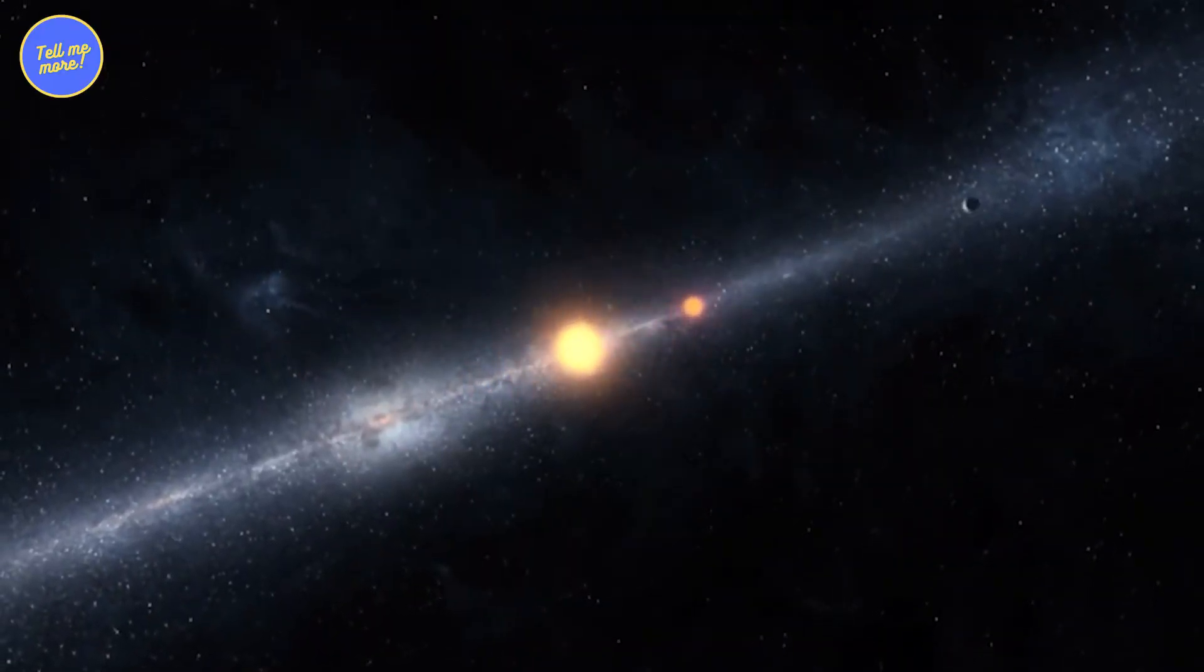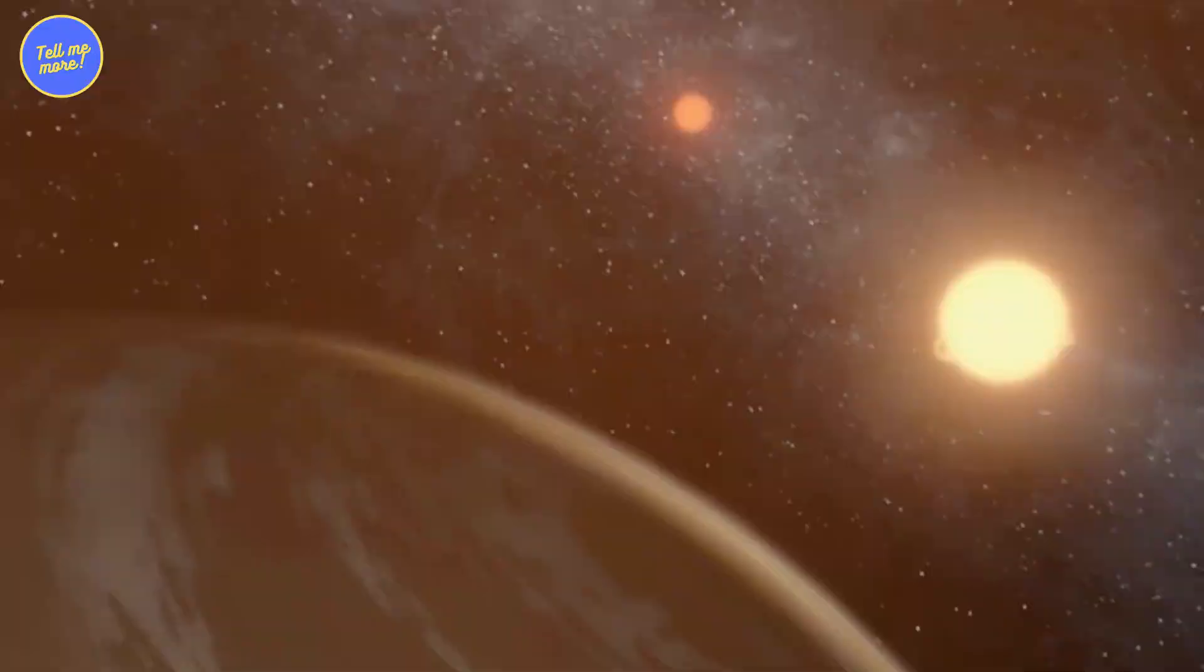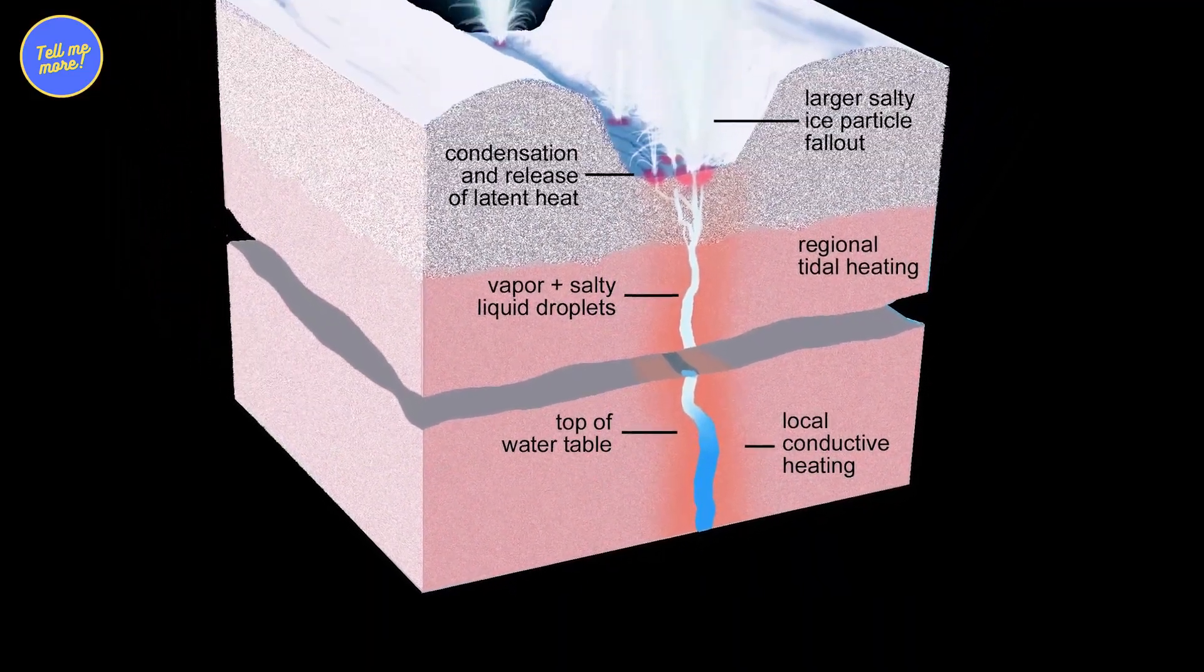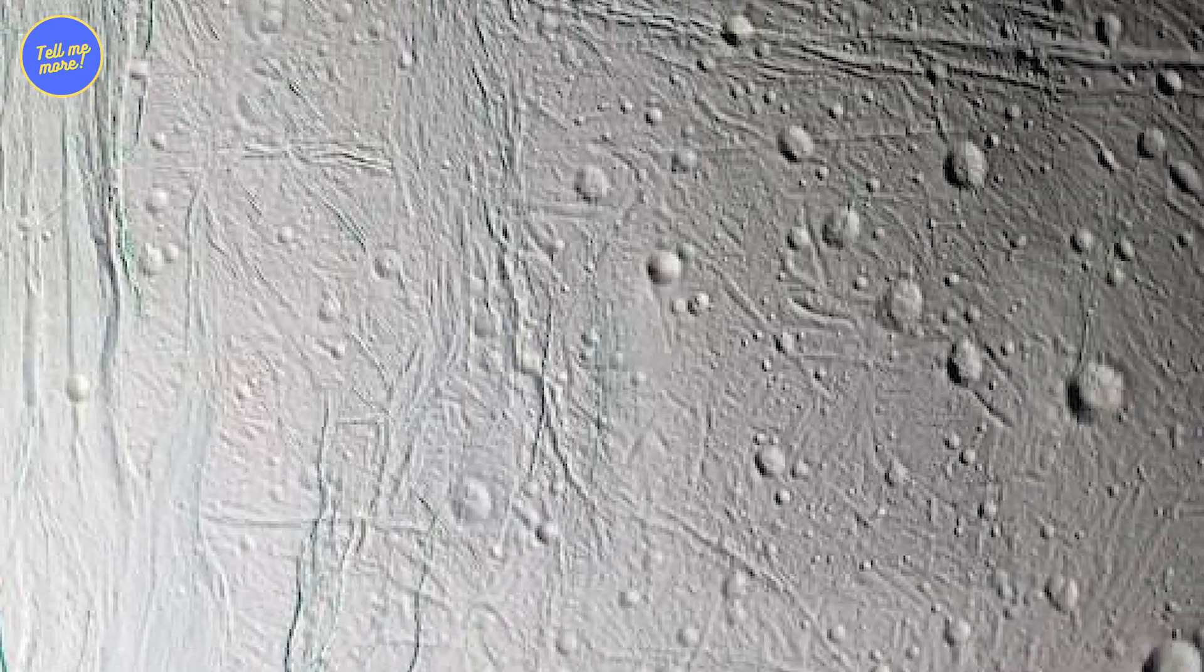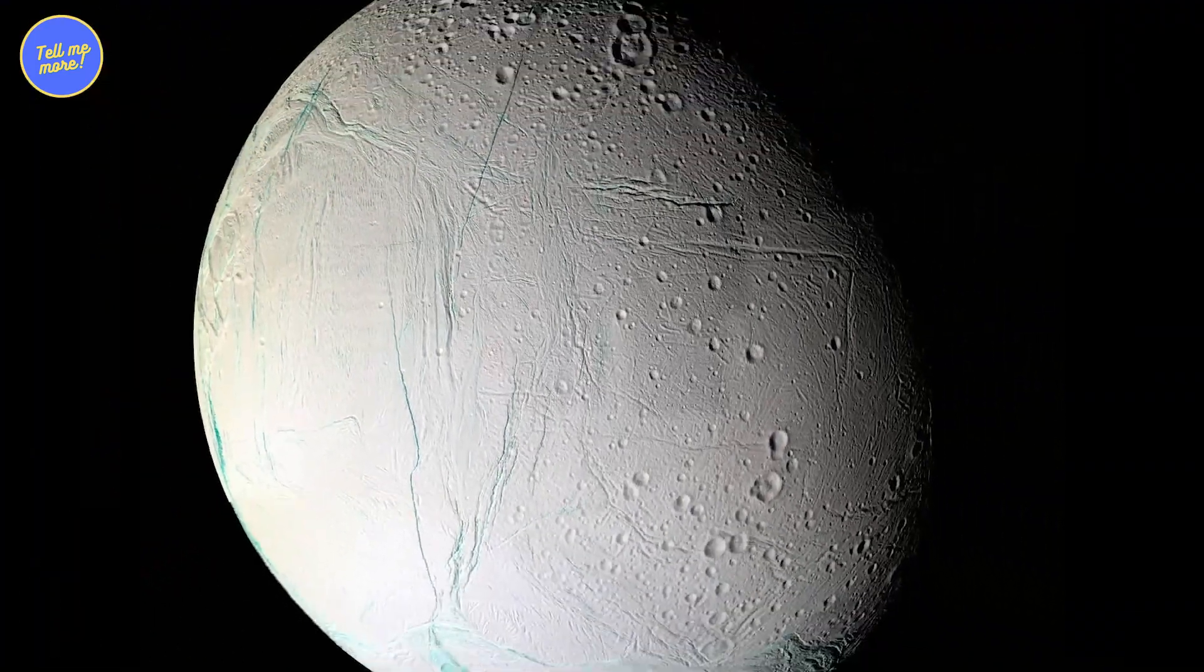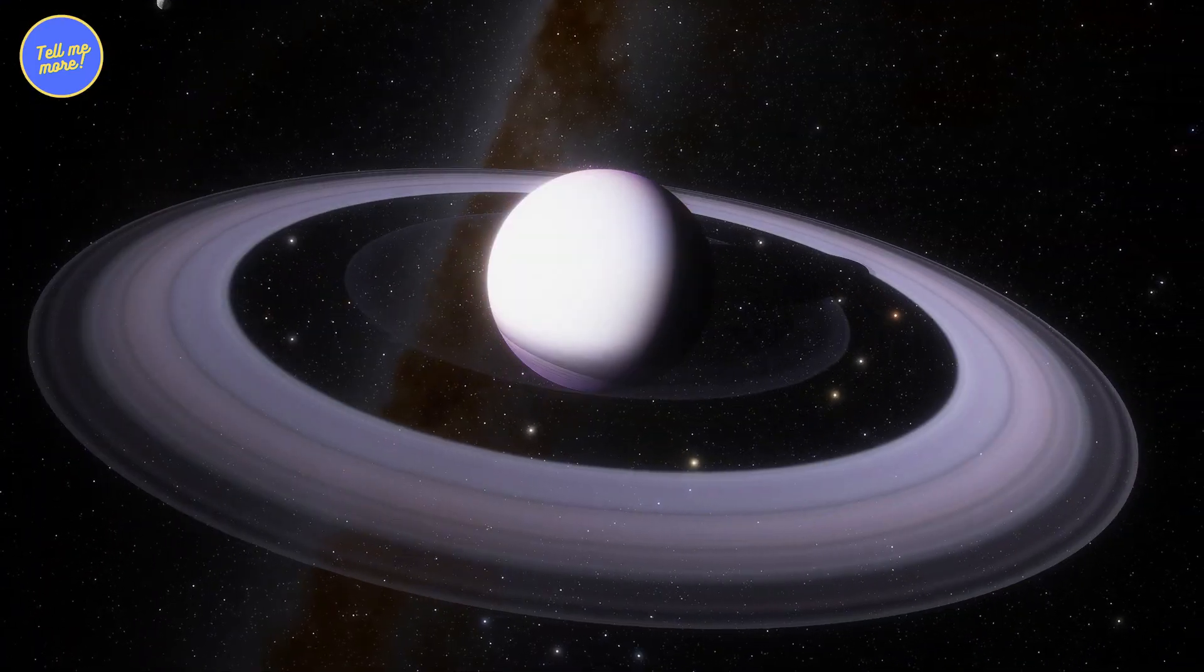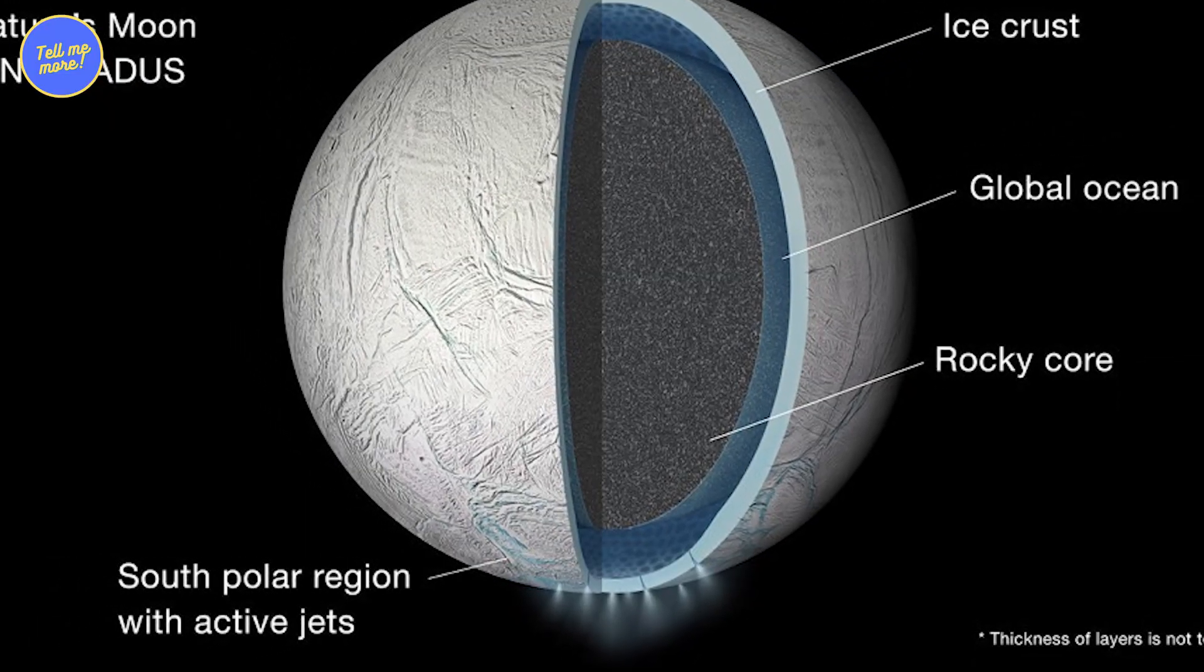And it didn't stop there. Cassini's data suggested that beneath Enceladus' icy crust lies a subsurface ocean. Yup, liquid water sloshing around under all that ice. Suddenly, Enceladus went from being just another moon to a potential hotspot for alien life. Saturn must be laughing in its ring system, knowing it had a watery ace up its sleeve all along.